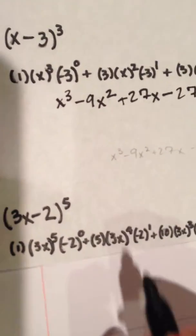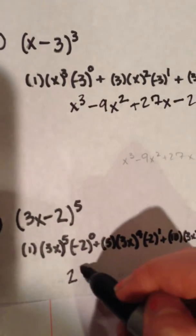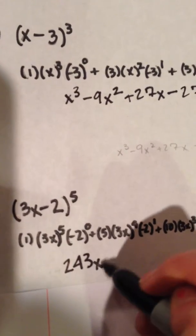Both of these are ones. They cancel out. So we start with 243x to the fifth.